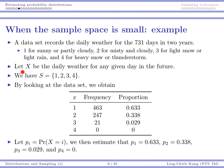If we let X be the daily weather for any given day in the future, then our sample space contains just four values: 1, 2, 3, or 4 according to our definition. The sample space is obviously small. If we want to estimate the probability for each value to occur, we look at the existing dataset and get all the frequencies.